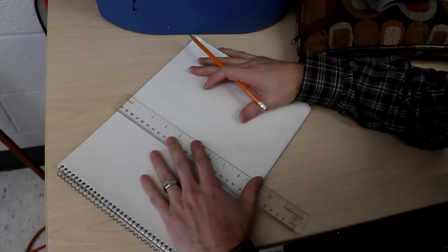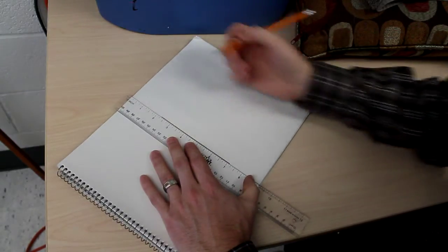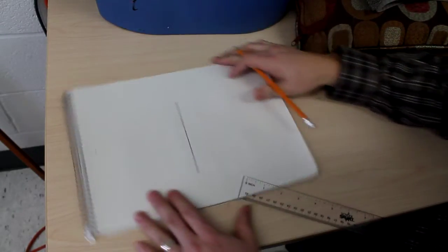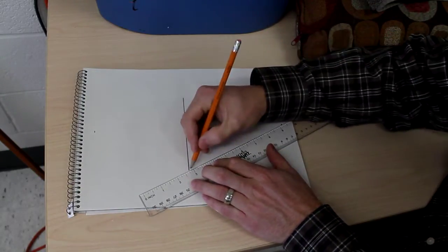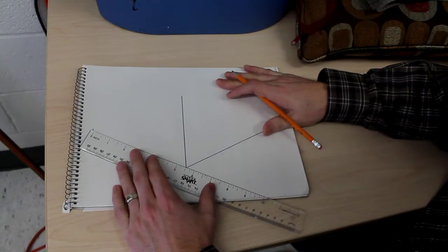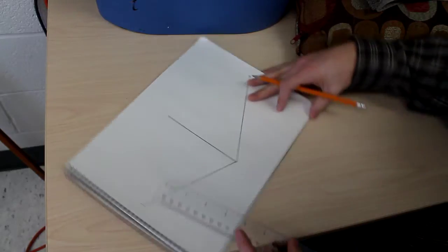We're going to start by making a line down the center. You're going to have two reference points at either side of your page. Like so. We're going to join the bottom line to the sides. And that will be the outline of the bottom of our city block.